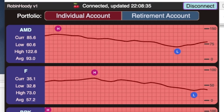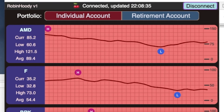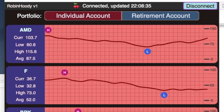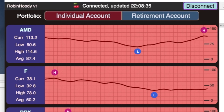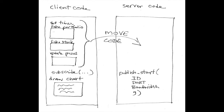Our basic program is now running fine on the local client machine with data being fabricated on the client side. Now we're going to move the client code that generates prices and sets up data to the server module. The server module will be compiled and run on a different computer, and then the client will subscribe to it.